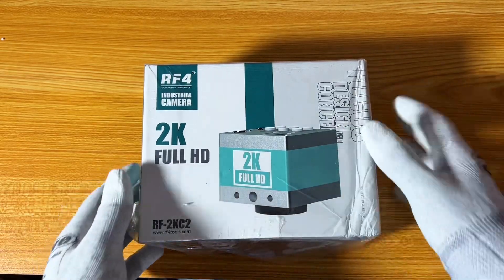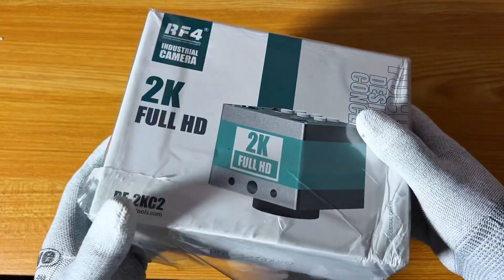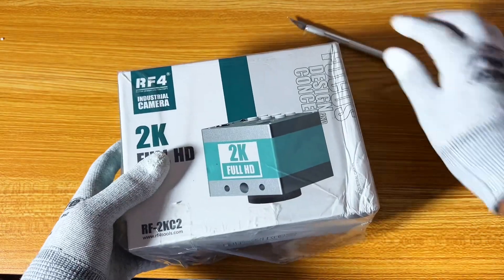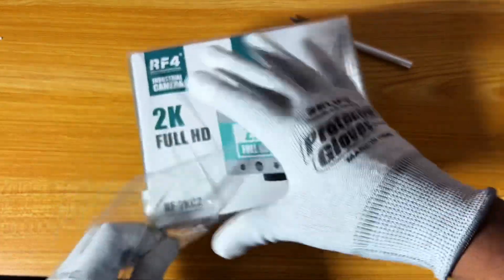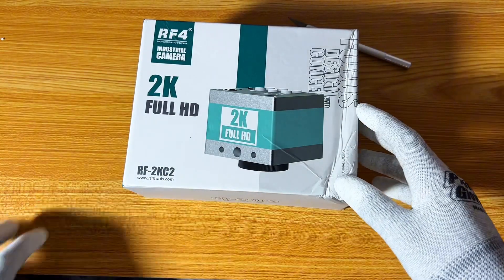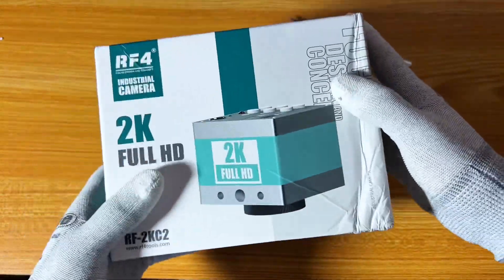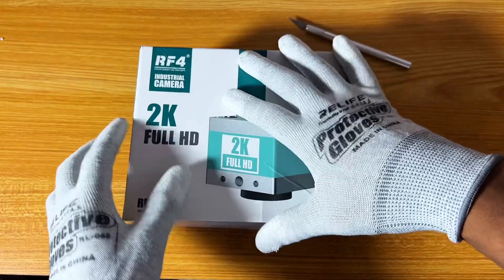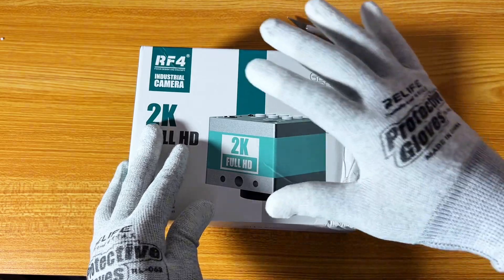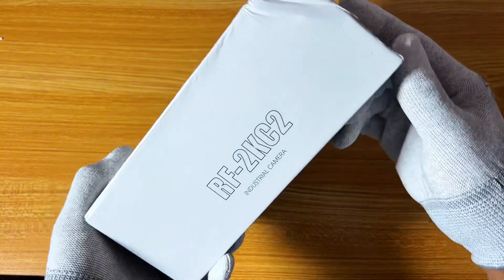Okay, what do we have here? This is a 2K microscope camera and we are going to be unboxing this. If you check the video I uploaded earlier today, you will see that I uploaded an RF4 microscope, so this will be the 2K camera which I will be using to extend the image of the microscope to my display. So let's see what's inside.